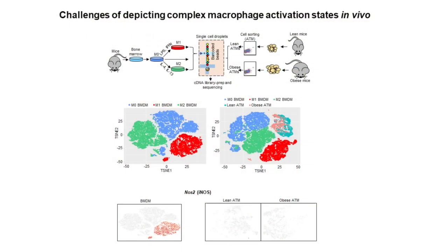As shown in this figure, adipose tissue macrophages from lean or obese mice displayed no similarity with bone marrow-derived macrophages stimulated with Th1 or Th2 stimuli. More importantly, many well-defined markers were either detected in few cells or displayed no clear patterns that allow understanding of the inflammatory characters of obese ATMs.